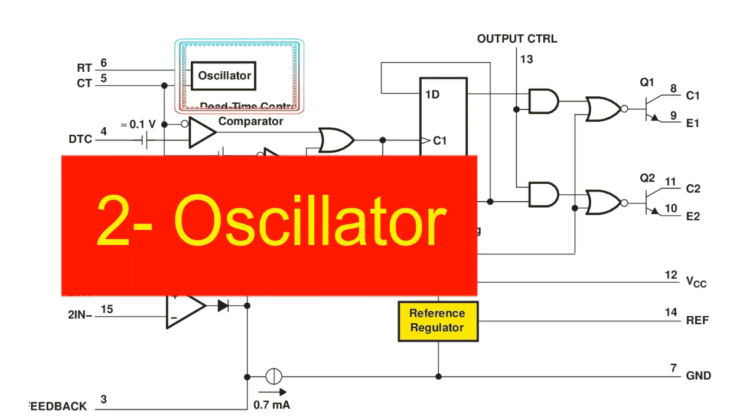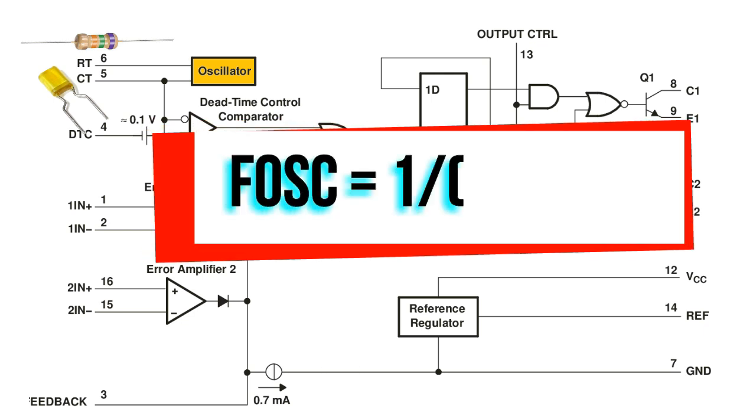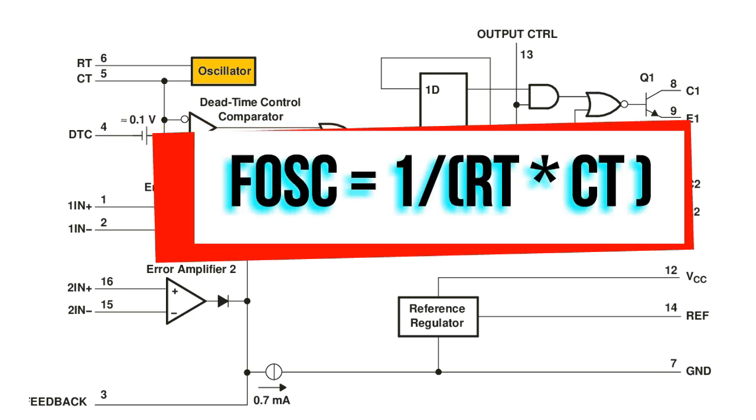The oscillator generates and provides a sawtooth wave to the dead time controller and the PWM comparators for various control signals. The frequency of the oscillator can be set by selecting timing components RT and CT. The frequency of the oscillator can be calculated by this formula.